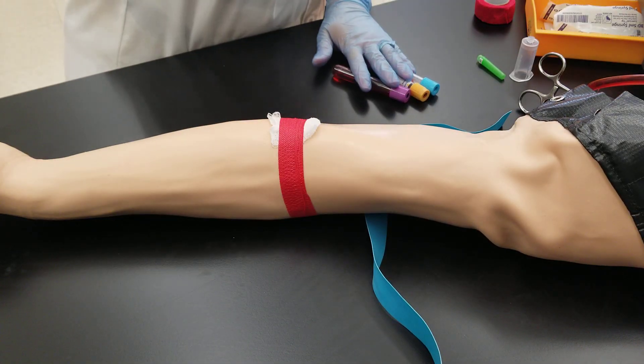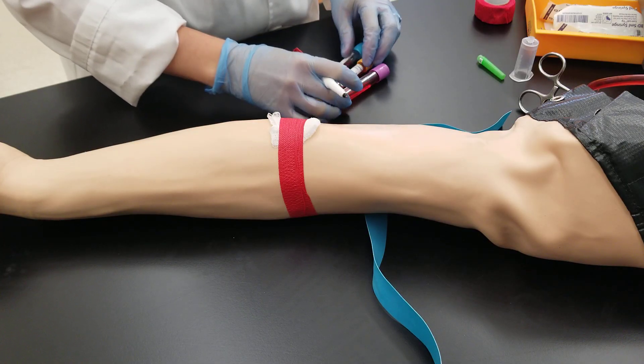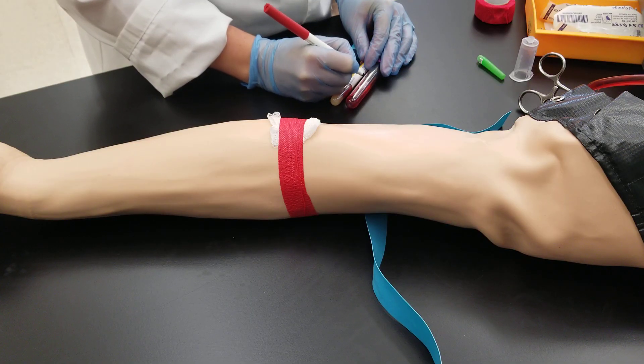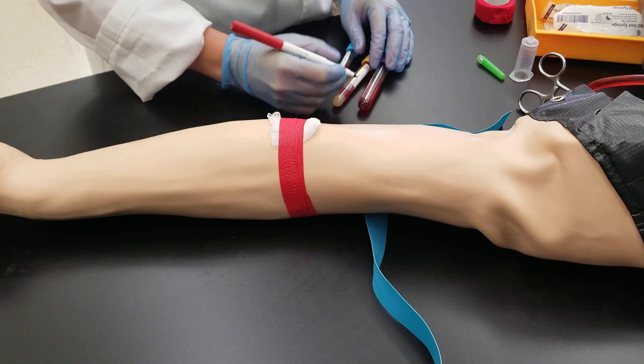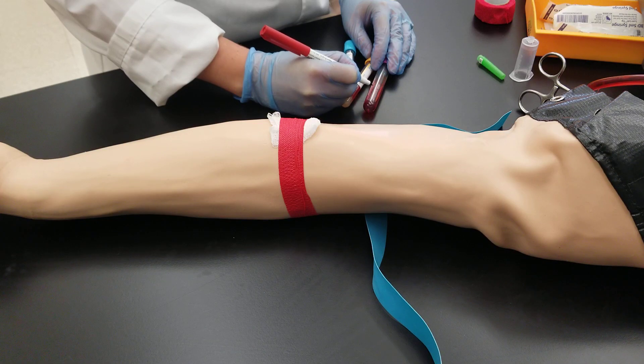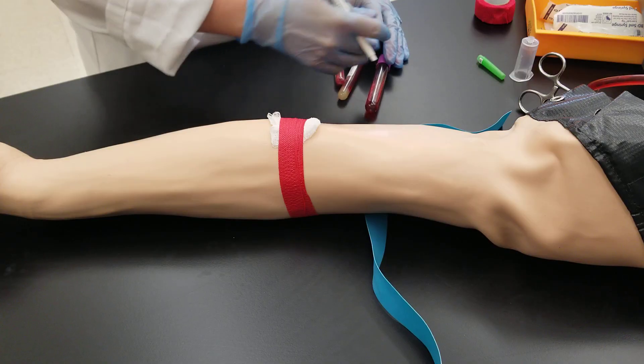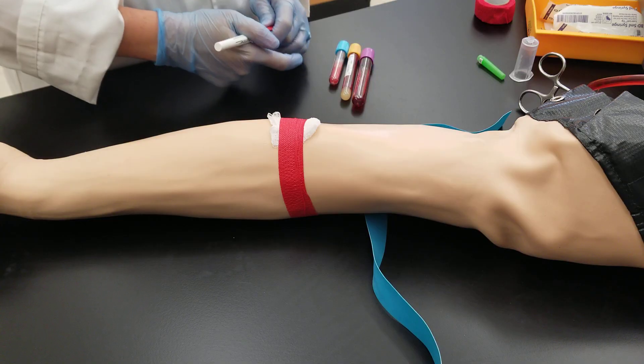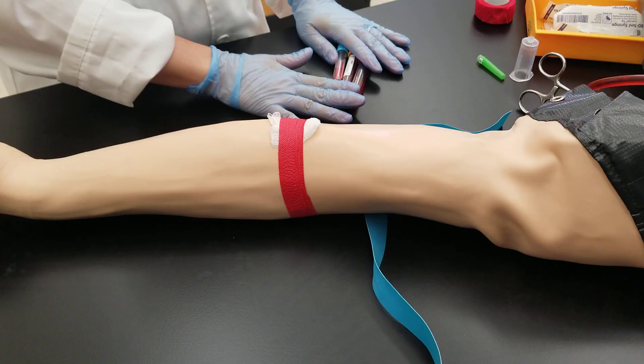And then I will label. If you have an automatic label from the system, then you can just put the stickers on here. So I'm putting the patient's information, my name and the date and time. And I will do that on all of these. You always label at the bedside to make sure that you don't have any possible clerical error and error of identity.